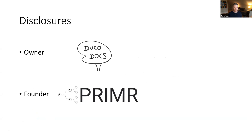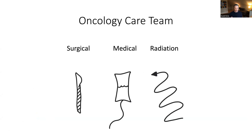For those who are not clinicians or not in the oncology space, here's a quick overview of the oncology care team as it relates to physician specialists. We really have three pillars: surgeons, who are primarily responsible for physically removing tumors; medical oncologists, who primarily deal with systemic therapies like chemotherapy, immunotherapies, and targeted therapies; and radiation oncologists, who use high energy x-ray beams to target cancer cells and destroy them to cure cancer.